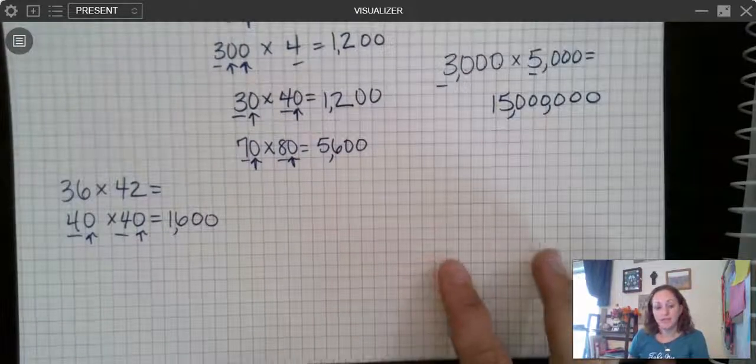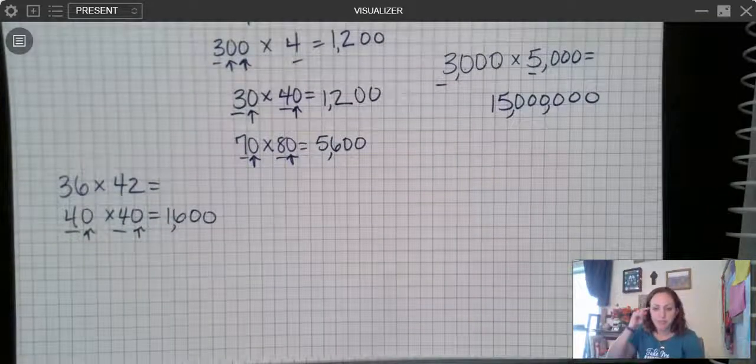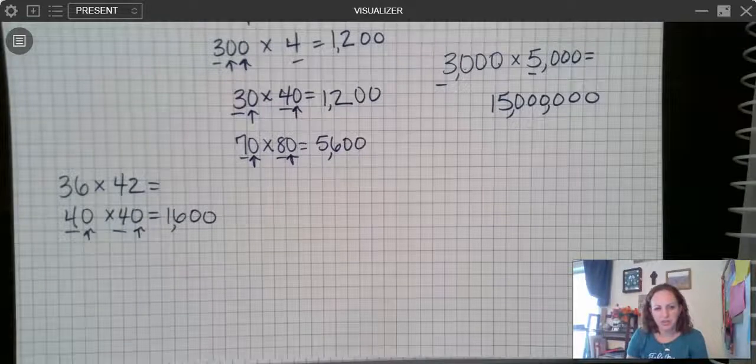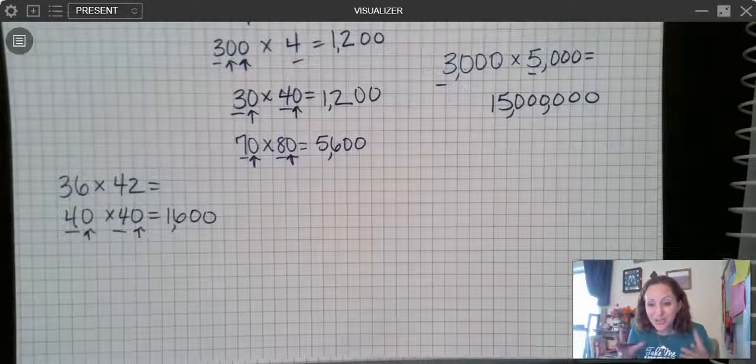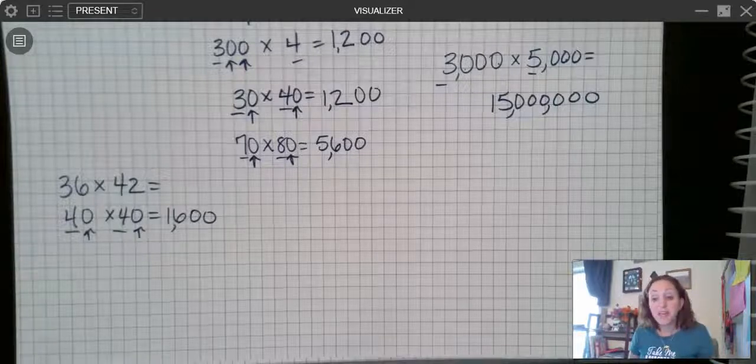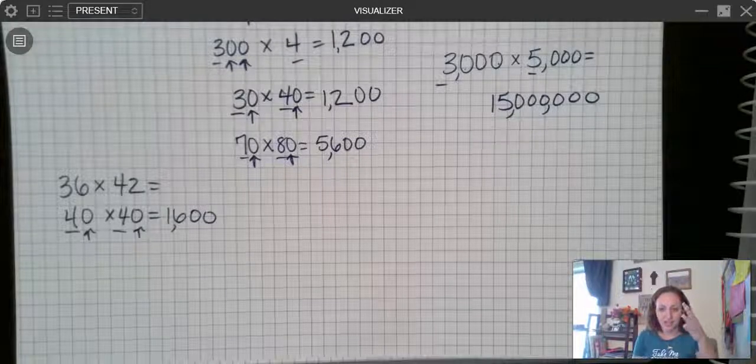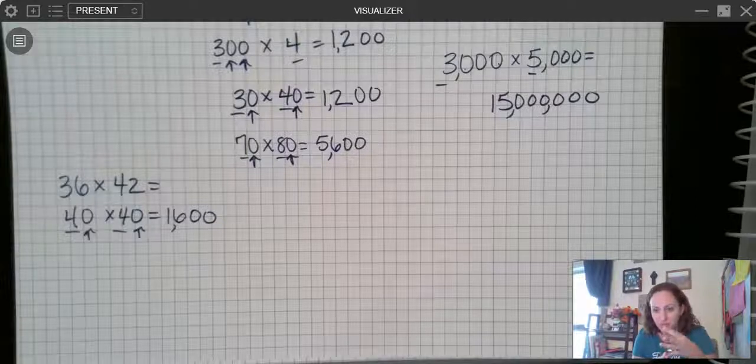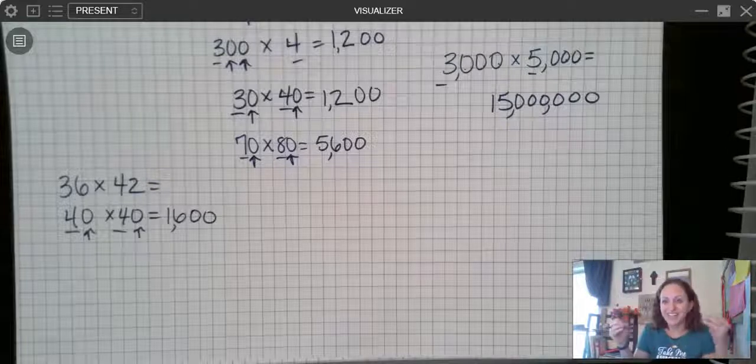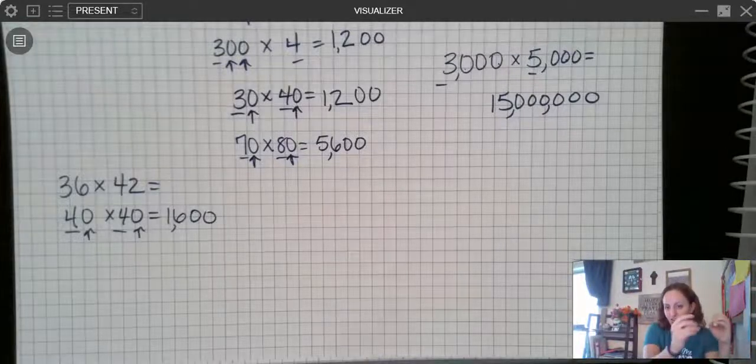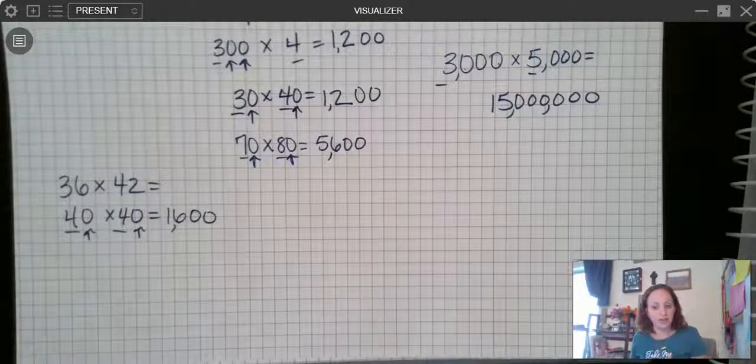There's another way that we can look at rounding and this is using compatible numbers because there are some numbers that are actually pretty easy to multiply by in your head. 25s for example, you may be like oh this is hard, I don't know my 25 times tables. Do you know how to count quarters? Because quarters are 25 cents, right? So if you have a pile of quarters I bet you know how to count to see how much money you have because you go 25, 50, 75, 100. You know that 25, 50, 75, 100. Well if you just want to keep going it's 125, 150, 175, 200. It's that same pattern, 25, 50, 75, 100 over and over again. So multiplying by 25 is really easy because you can count that in your head really easily.